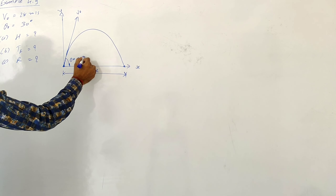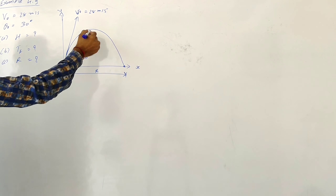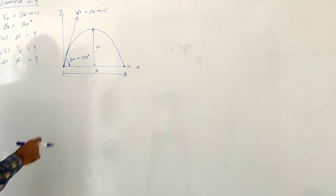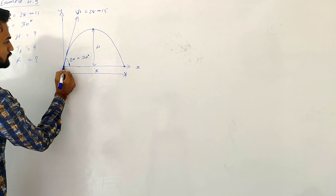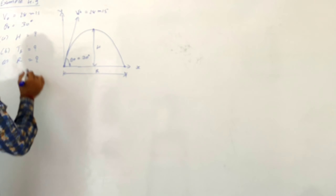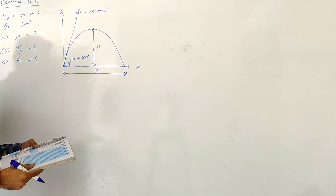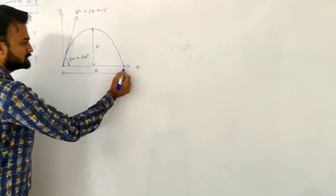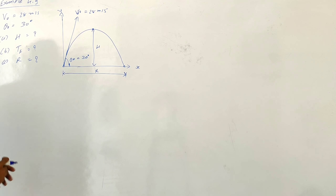So here in this example, the initial velocity is given as 28 meters per second and the ball is thrown at an angle of 30 degrees. So theta₀ is 30 degrees and initial velocity v₀ is 28 meters per second. For Part A, find the maximum height — that is the maximum displacement in the vertical direction. For Part B, find the time taken by the ball to return to the same level — initially it was here, and the same horizontal plane will be here, same level. For Part C, we need to find the range.